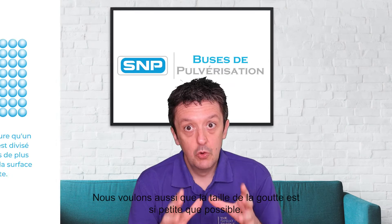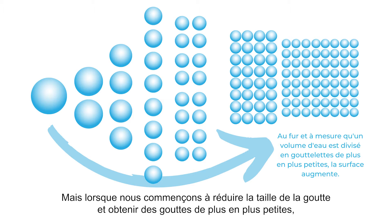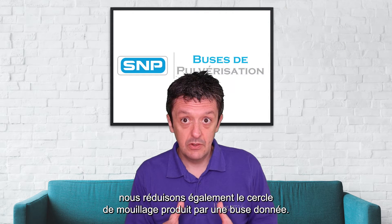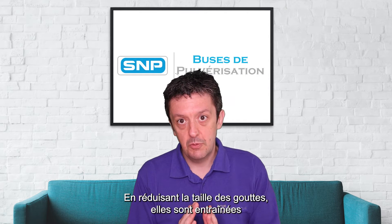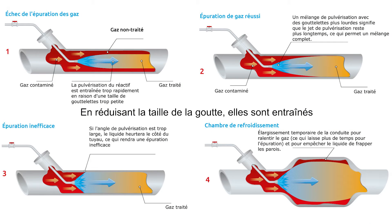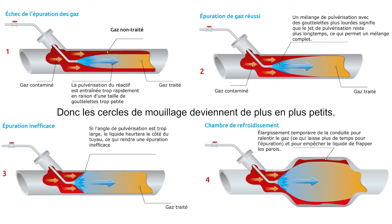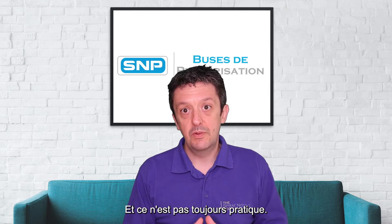There are a couple of problems here. We also want to get the drop size as small as possible, but as we reduce the drop size and get smaller and smaller droplets, we also reduce the circle of wetting for any given nozzle, and this is particularly true in fast-moving gas flows. As we reduce that drop size, droplets get entrained faster within the gas flow, so the distance they can penetrate perpendicular to the gas flow gets smaller and smaller, meaning the circles of wetting get smaller and smaller.